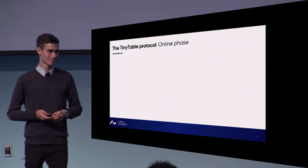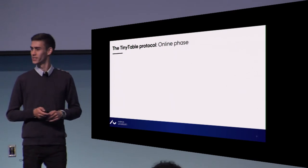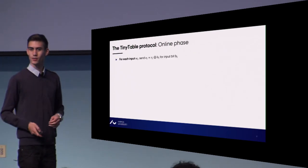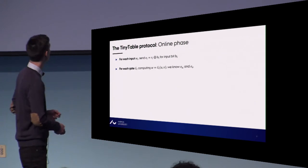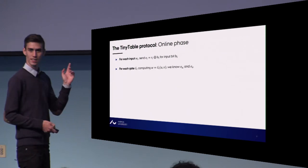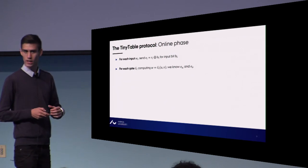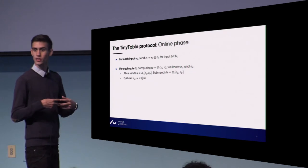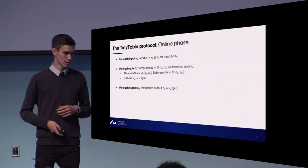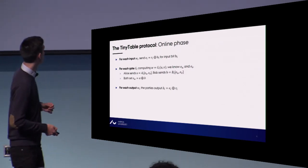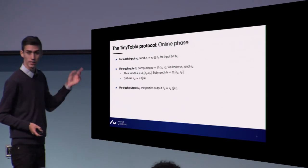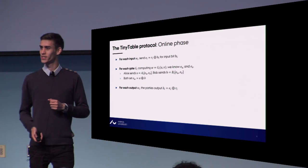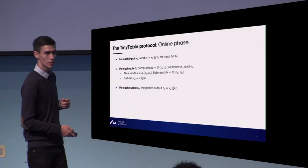For the online protocol — this is maybe the simplest online protocol you've ever seen for two-party computation. For the inputs, we send the one-time pad encryptions of the inputs. For each gate, as an invariant, we know the encryptions of the input wires, so we simply look up in the tables, exchange the shares, and reconstruct the encrypted output. Finally, for the output, we use the output mask to decrypt the result, and both parties know this mask.